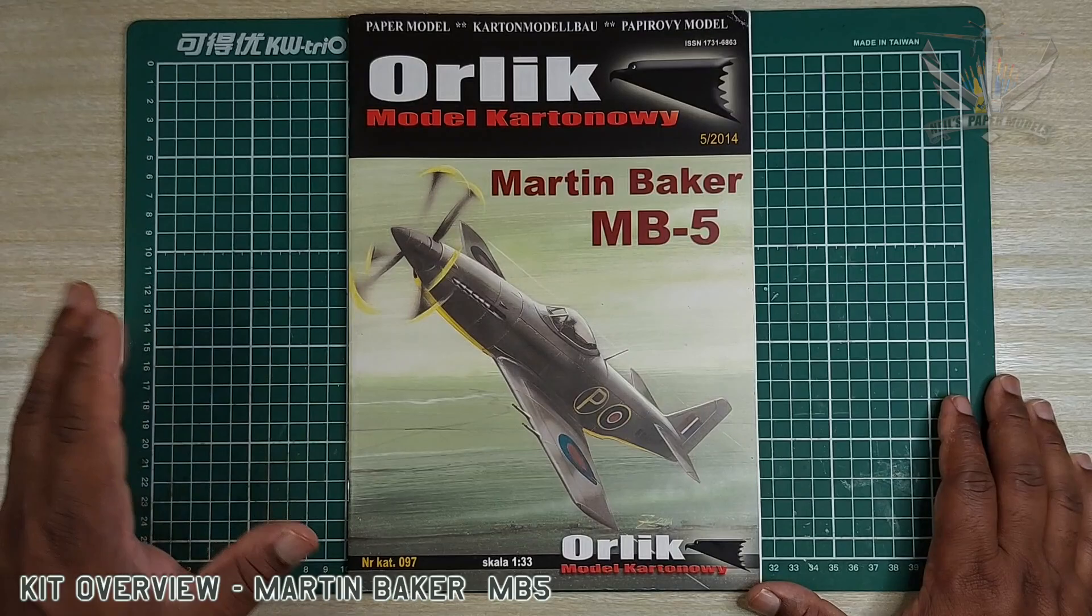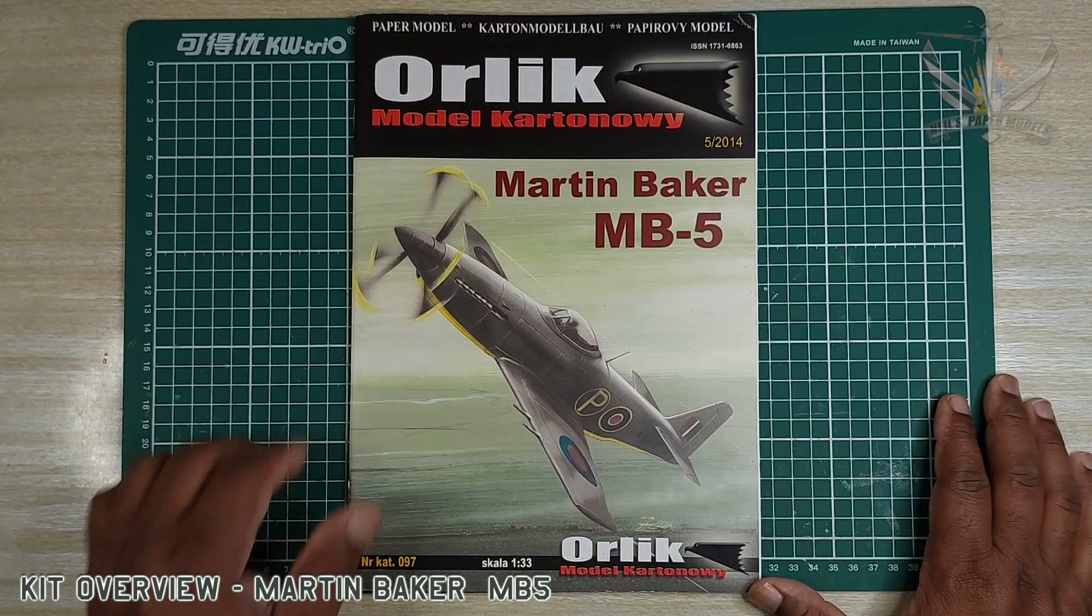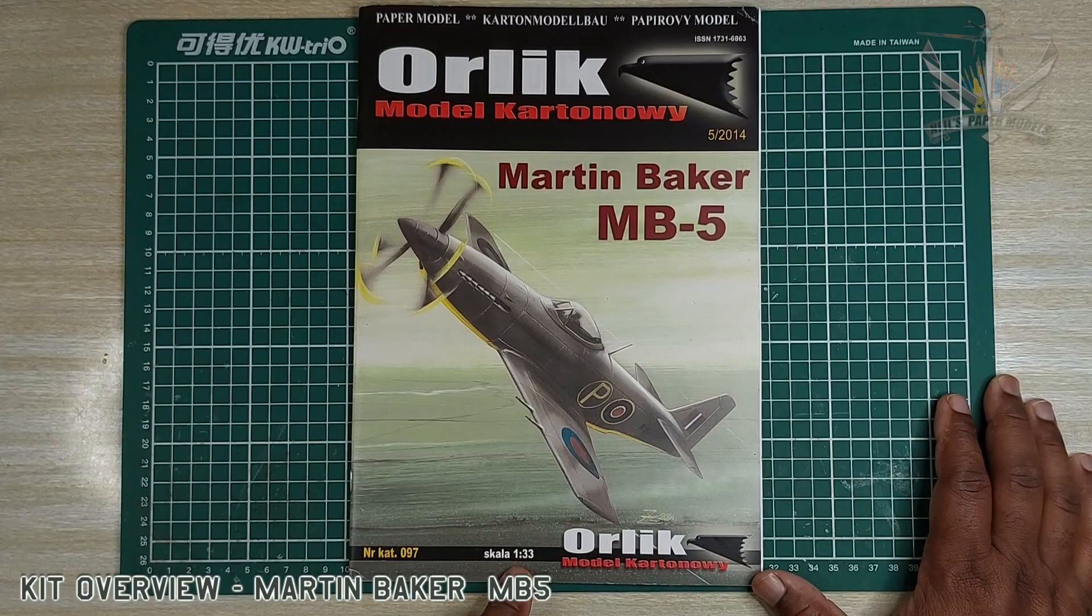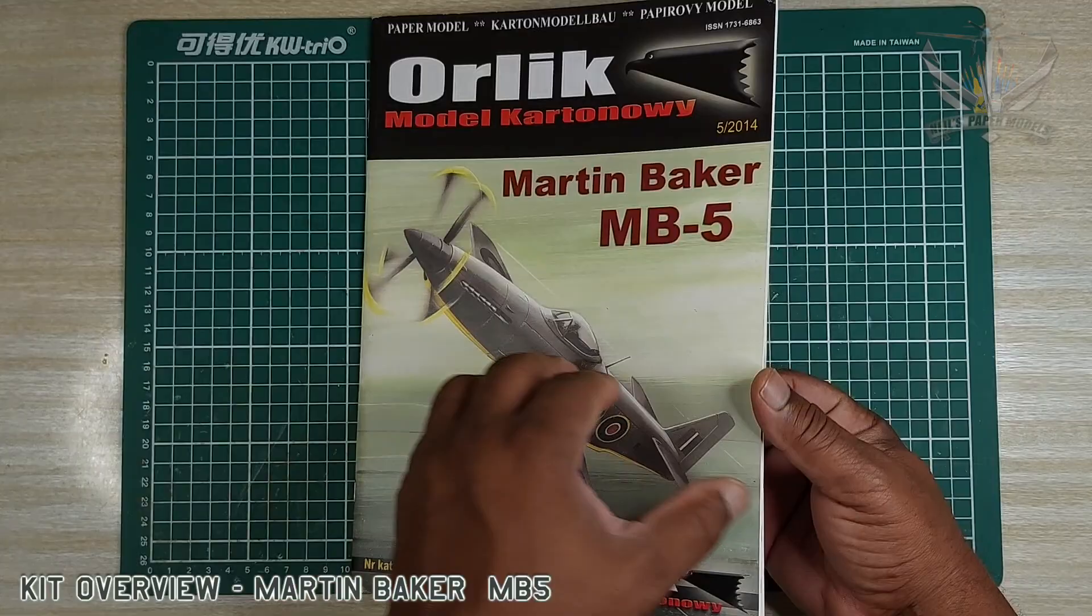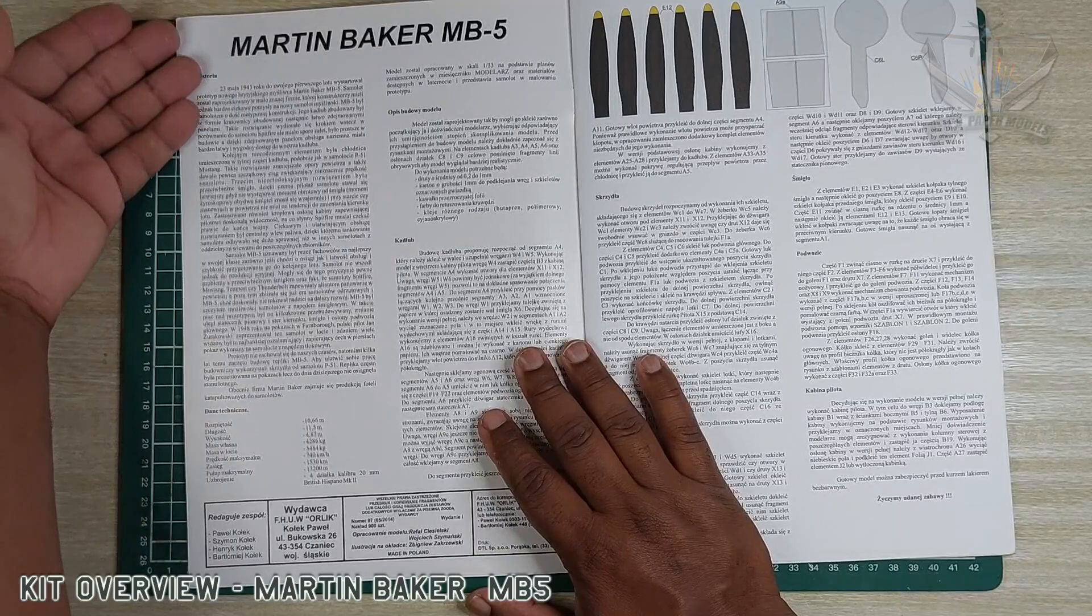Greetings fellow modelers and season's greetings to all those around the world. So here we have an Orlick kit, the Martin Baker MB5, kit number 97, scale 1:33, and this is from 2014. So let's dive right in as usual.